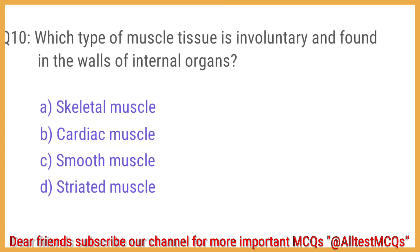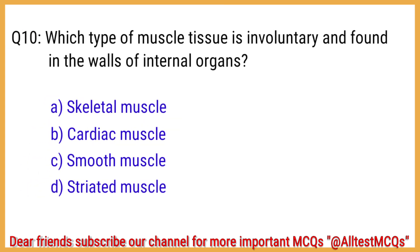Q10. Which type of muscle tissue is involuntary and found in the walls of internal organs? The right answer is option C: Smooth muscle.